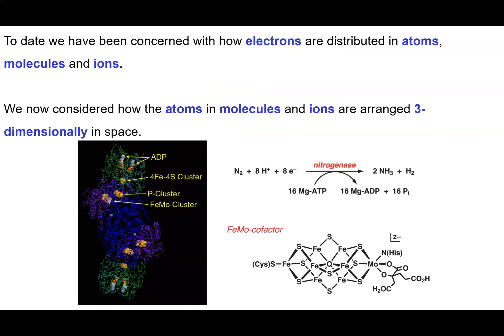What we've been concerned with to date is how electrons are distributed between the different atoms that make up a molecule or perhaps a polyatomic ion. We've really been looking at how electrons are shared between atoms, or alternatively how electrons are transferred between atoms. What we're going to do now is consider how the atoms themselves are organized in three-dimensional space, and this is really, really important.